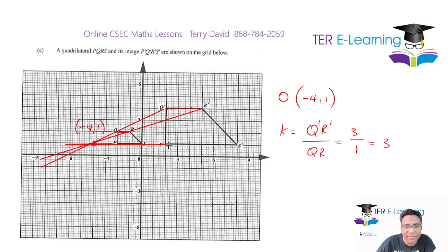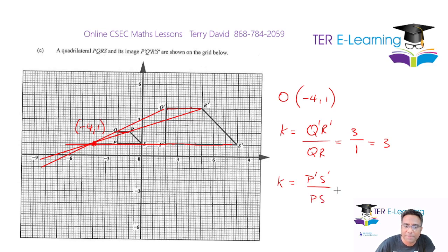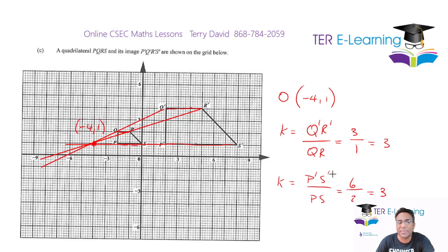I can verify using P'S' divided by PS — P'S' has a length of 6 units and PS has a length of 2 units, which also gives 3. So the scale factor K for this enlargement is 3.